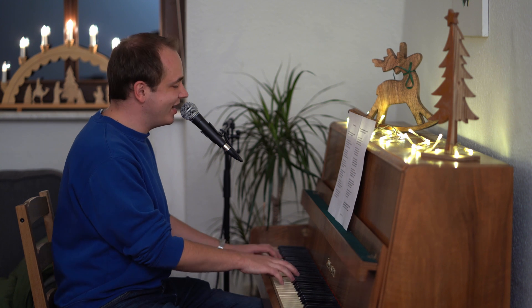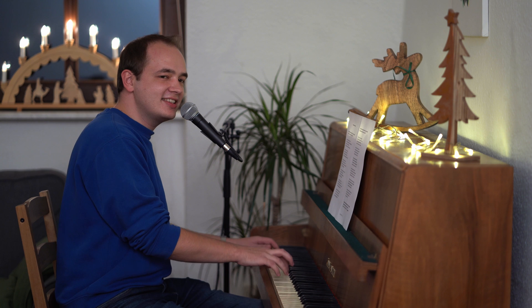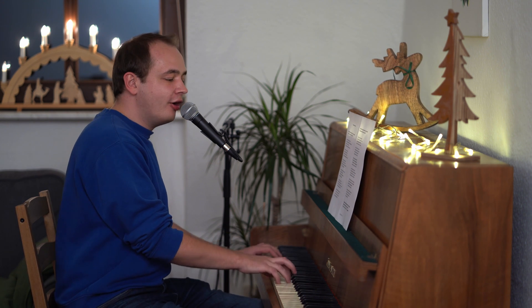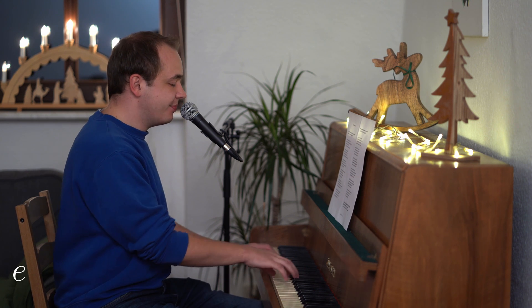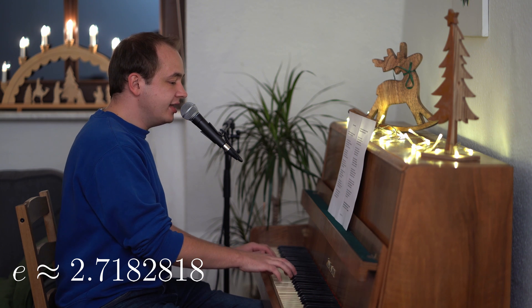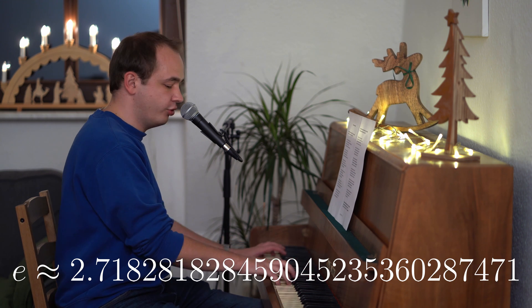Euler's number is irrational. Euler proved it, so there is no debate. Euler's number is irrational, and it's about 2.718281828459045235360287471, approximately.